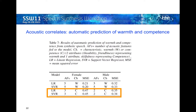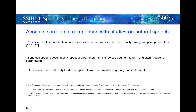Here is the comparison of our work with studies on natural speech. Literature suggests that acoustic correlates of various emotions and expressions can be divided into three categories: voice quality, timing, and pitch parameters. We observed that acoustic correlates of social speaker characteristics in synthetic speech can also be categorized into these three categories as in natural speech. The acoustic features intensity or loudness, spectral flux, fundamental frequency, and its formants are common acoustic features in both natural and synthetic voices contributing to various emotions and speaker characteristics.